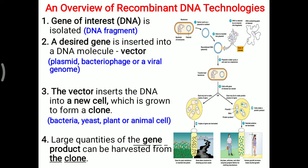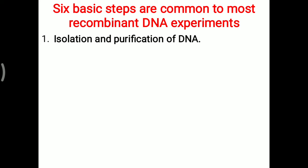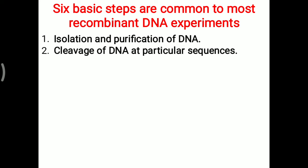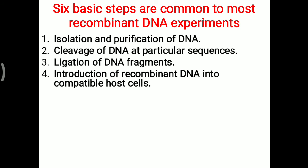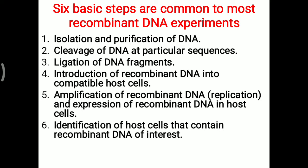In detail, six steps are common to most recombinant DNA experiments: (1) isolation and purification of the gene or DNA fragment; (2) cleavage of DNA at a particular sequence; (3) ligation of the DNA fragment; (4) introduction of recombinant DNA into a compatible host cell; (5) amplification and expression of recombinant DNA in the host cell; and (6) identification of the host cell containing the recombinant DNA of interest.